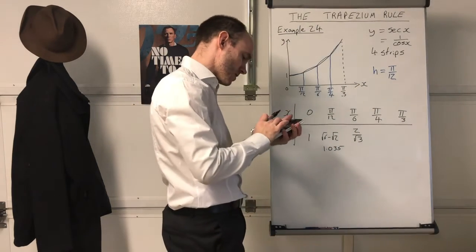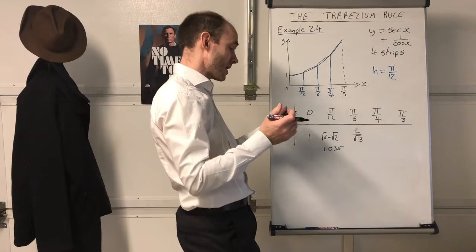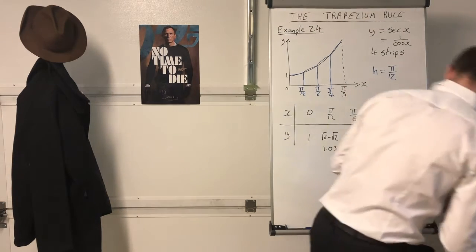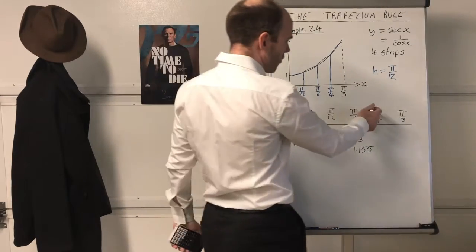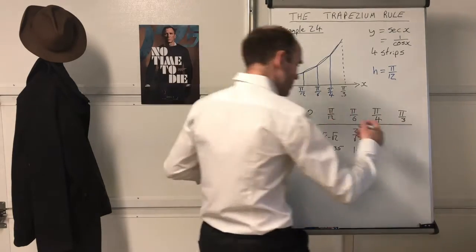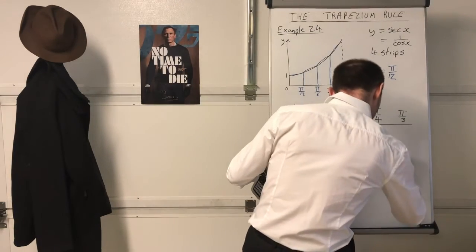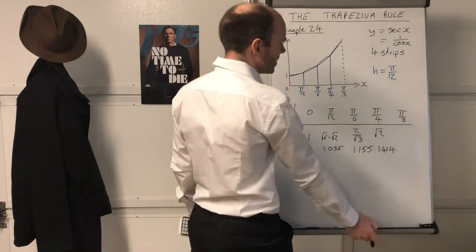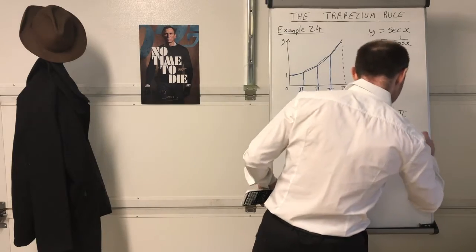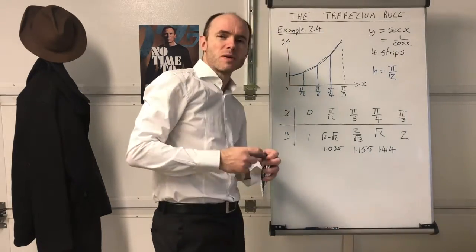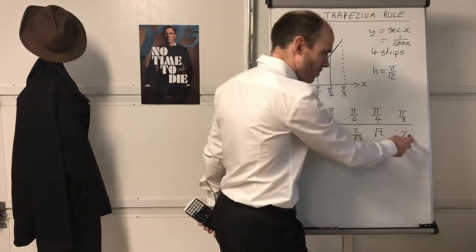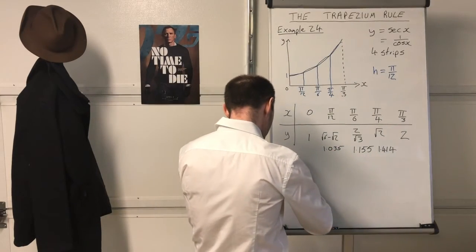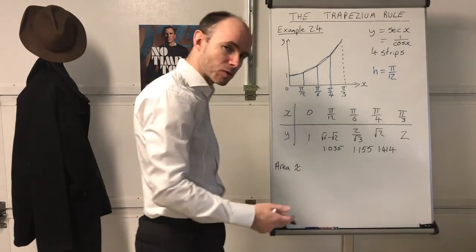2 divided by √3 equals approximately 1.155 to three decimal places. For π/4, cos(π/4) is 1/√2, so sec(π/4) is just √2, which is approximately 1.414. For π/3, cos(π/3) is a half, so sec(π/3) is 2. By the way, three decimal places 'where appropriate' — you would not write 2.000 or 1.000.